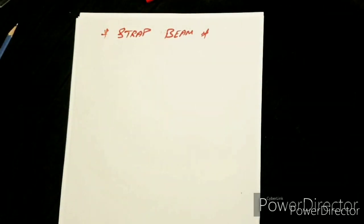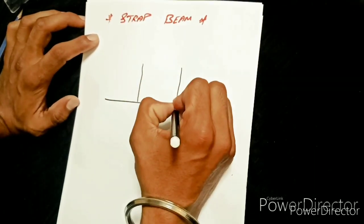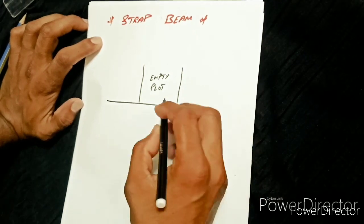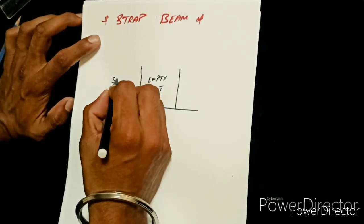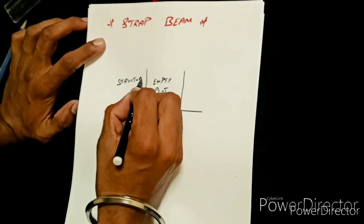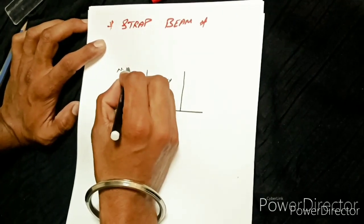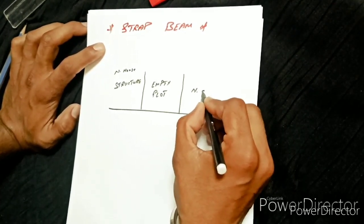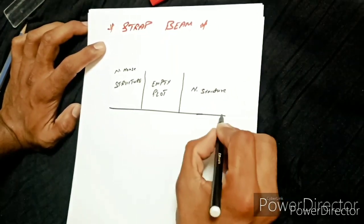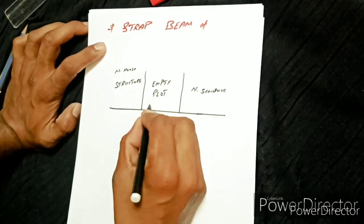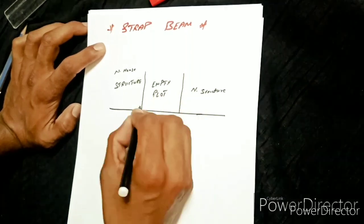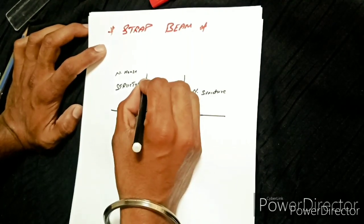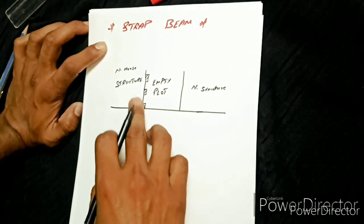Let's suppose a condition. There is an empty plot where you want to make your house, building, or any structure. On one side there is a neighbor's house, and on the other side as well. To utilize the whole area of your empty plot, you will place a column right at the edge.